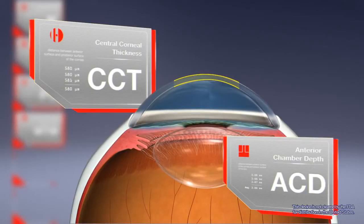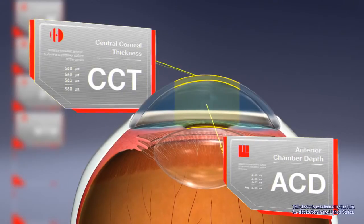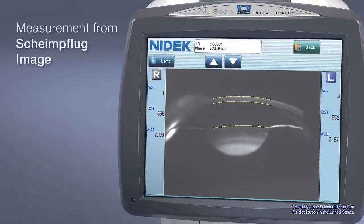With Scheimflug imaging of the anterior eye, accurate measurements of central corneal thickness and anterior chamber depth can be obtained, and those measurements can be verified on screen.